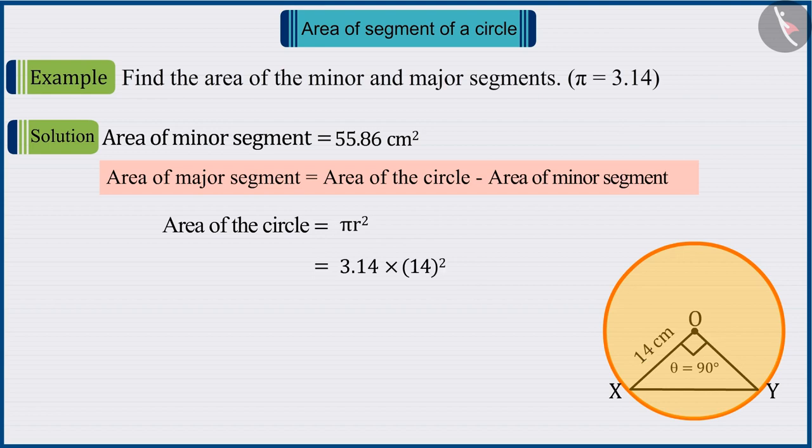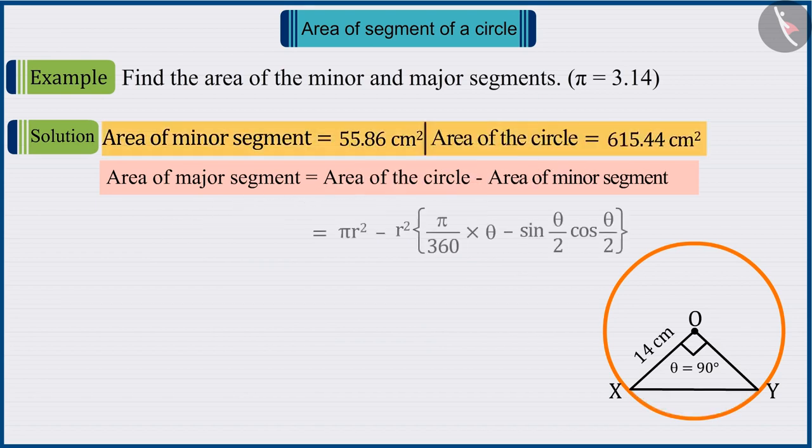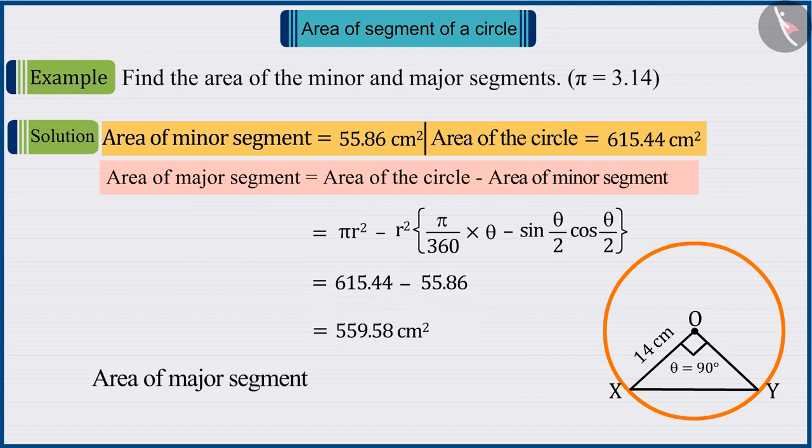The area of the circle is 615.44 cm² and the area of the minor segment is 55.86 cm². On solving, the area of the major segment is obtained as 559.58 cm².